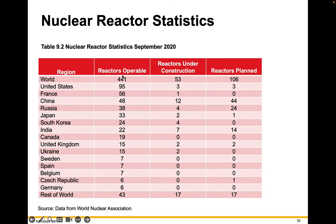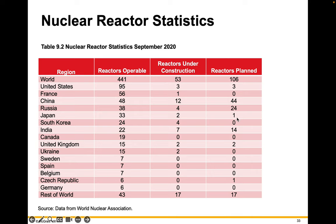Here are some statistics about nuclear reactors — take some time and study this table. Of all the operable reactors in the world, a little less than a quarter are in the U.S. Most seem to be in the Northern Hemisphere. The U.S. has almost 100 but doesn't really have plans to build many more, whereas China is going to almost double their number of nuclear reactors. Russia is a little less than doubling, and India is going to add 50% more than what they have now.